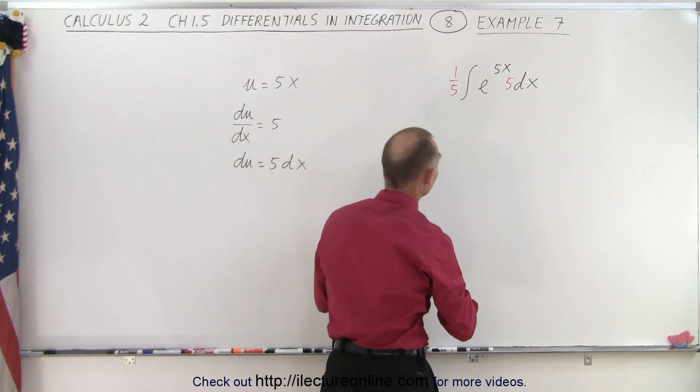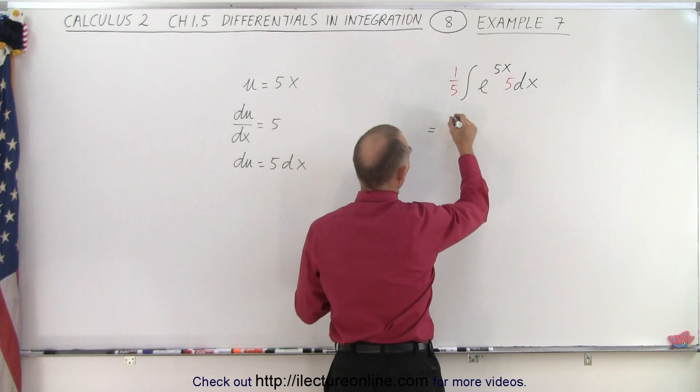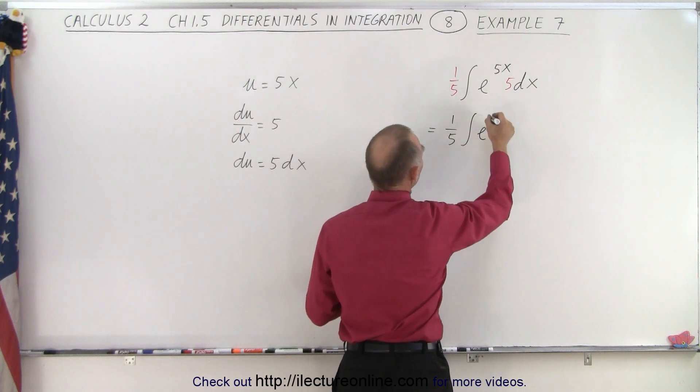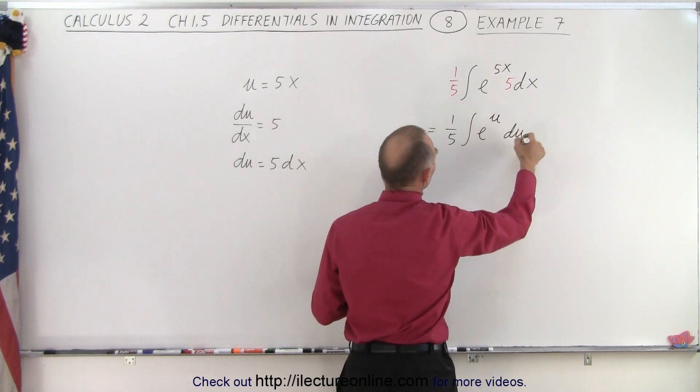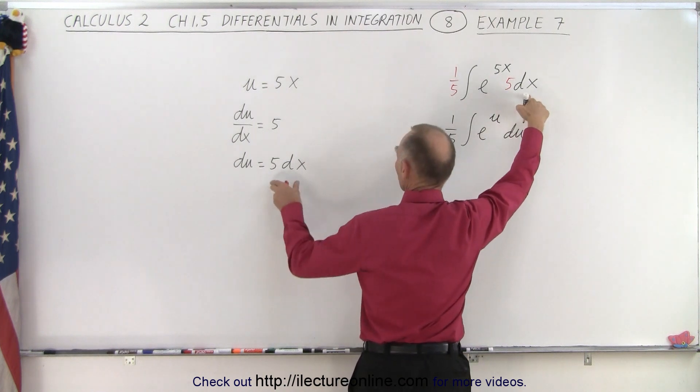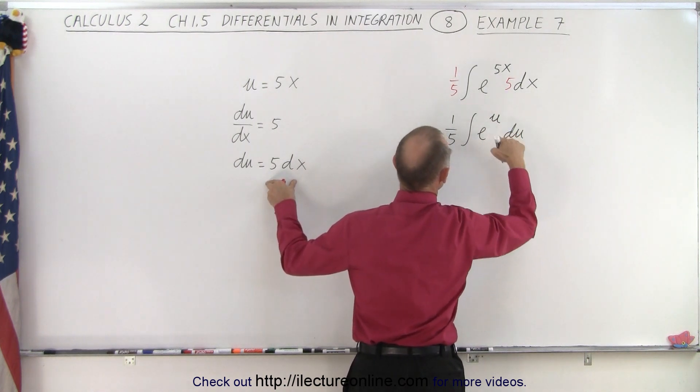Now you can say that you have the following integral: this is equal to 1/5 the integral of e to the u du, because you have the 5dx for du, and e to the u du.